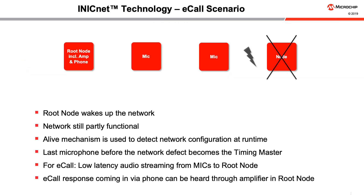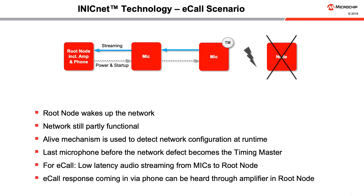A special use of iNICnet is presented in an eCall system, where operation of the network is critical for emergency calls. The root node delivers power to the remaining network devices and starts up the network, which is still partly functional. An alive mechanism is used to detect the network configuration during runtime; in this case, the last microphone before the network defect becomes the timing master. In an emergency call, the driver's voice is streamed from one of the microphones back to the root node, which passes the information to the eCall service via phone connection. Answers from the eCall service come in via phone and can be heard through the amplifier in the root node.